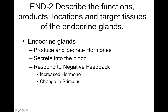This is the second objective where we talk about functions, products, locations, and target tissues of the different hormones and glands. Endocrine glands in general produce and secrete hormones into the blood, and they respond to negative feedback — either to an increase in hormone levels or a decrease in the stimulus that caused that hormone to be released.